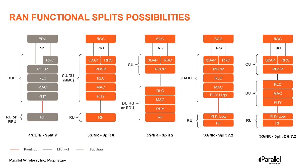Before we look at the reference architecture, let's revisit the RAN functional splits from our RAN splits video. Most of you will no doubt be familiar with the reasons why these are defined and what layers end up in CU, DU, and RU. Most of the 5G deployments will be based on the last three approaches on the right-hand side: split 2, split 7.2, and a combination of them.